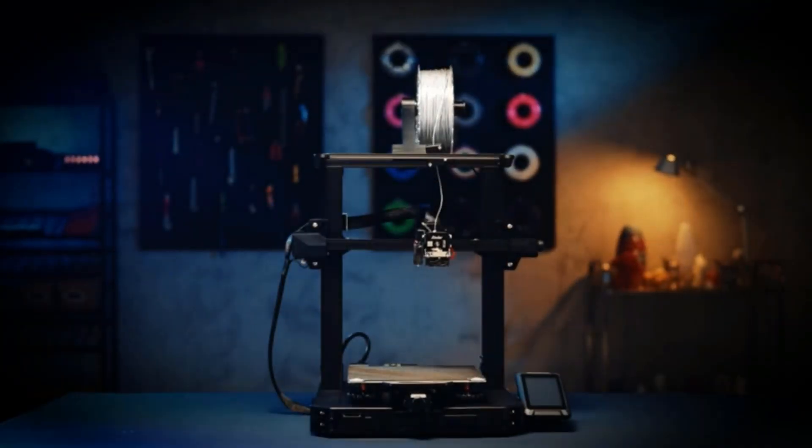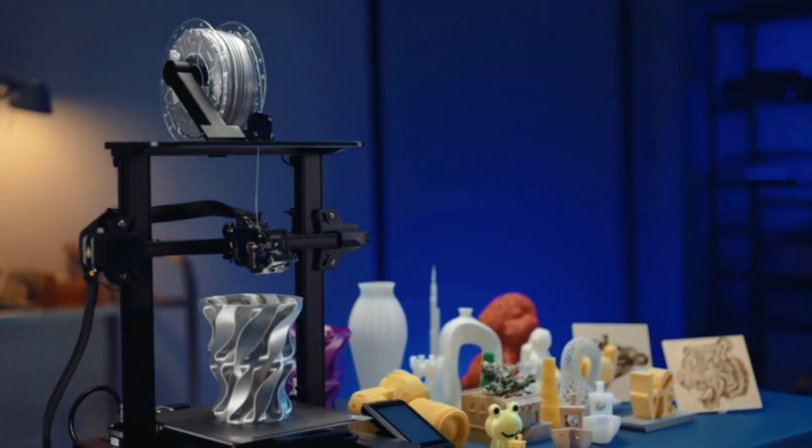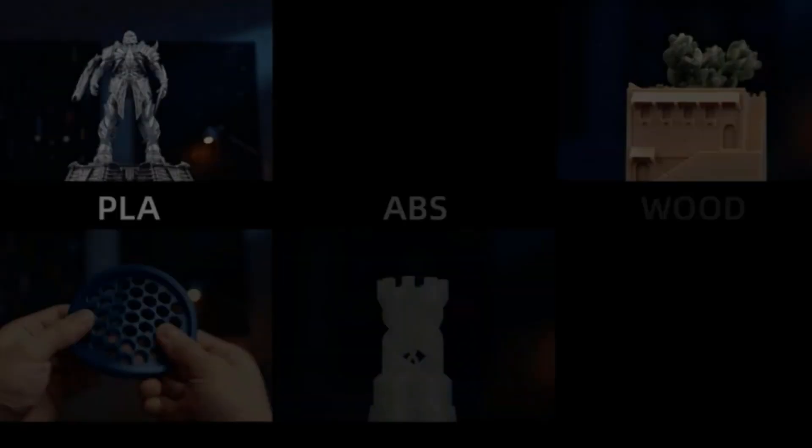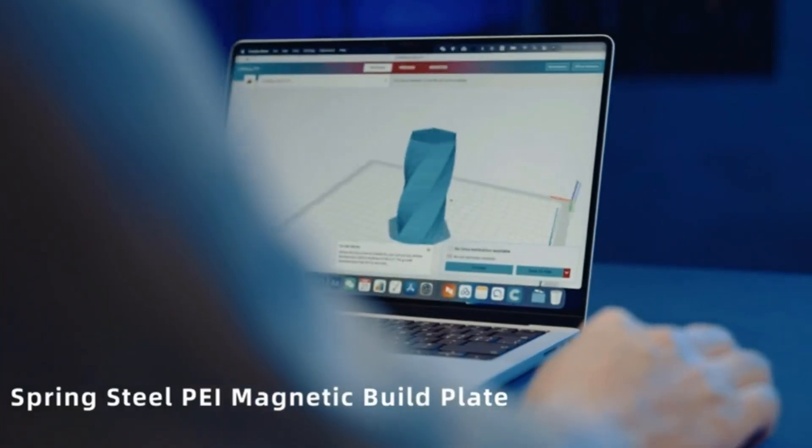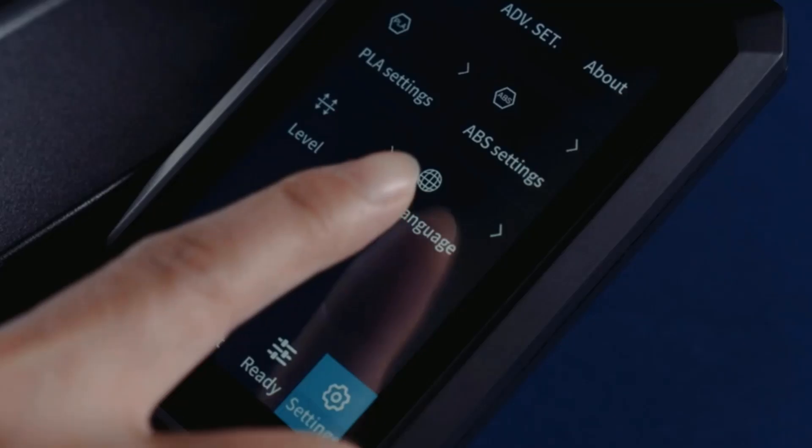For software, you can use either Cura or the company's own Creality Slicer. The Ender 3 S1 Pro works with a variety of filament types, including PLA, ABS, PETG, PA, wood composite, and TPU.